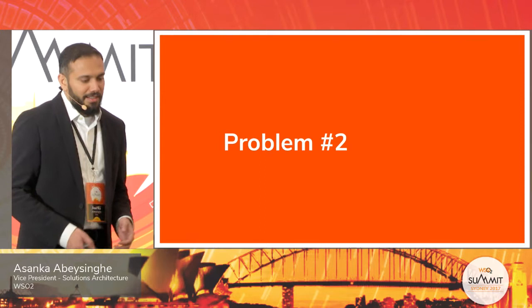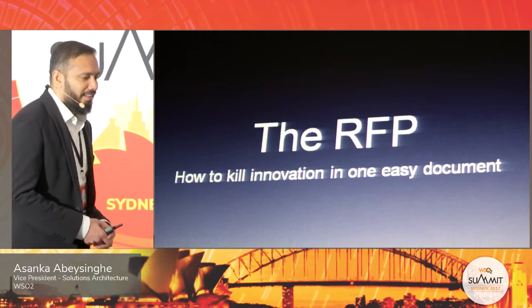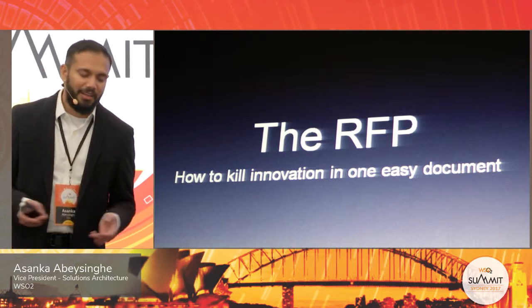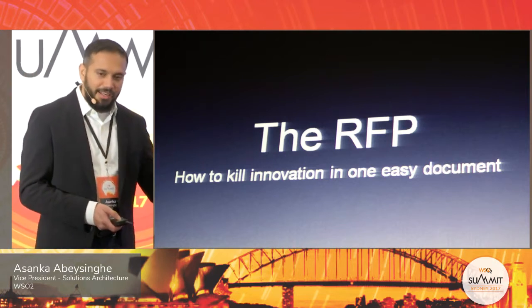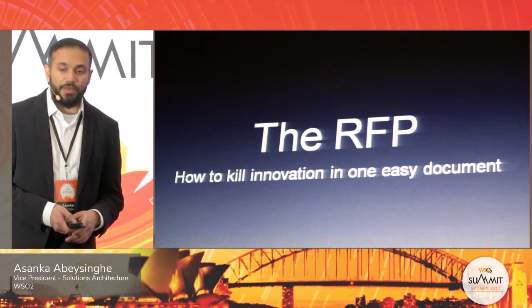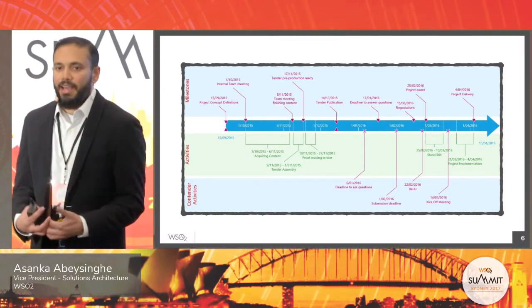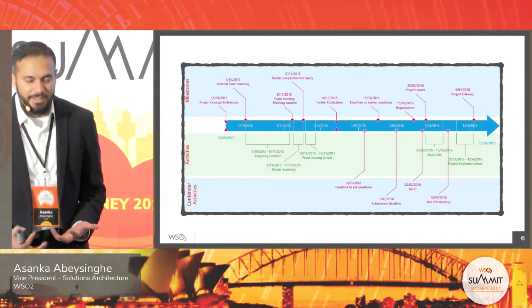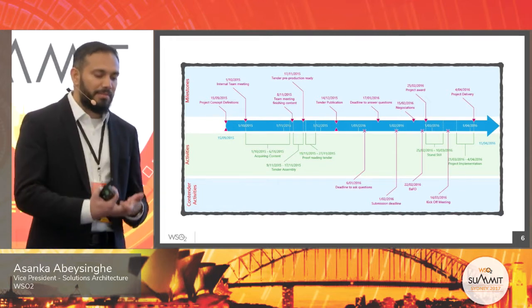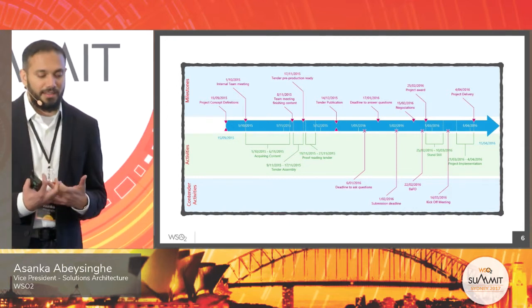The second problem is RFPs. We fill around 10 RFPs at a time across various domains. The problem with the RFP is again connected to the waterfall method, but it's more than that — you spend a lot of time creating the RFP, then you open it, collect responses, do a selection process, and sometimes the selection process includes demos, building POCs.